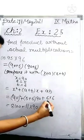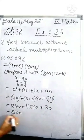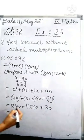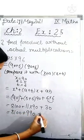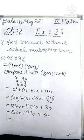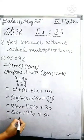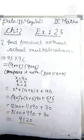5 multiply 6 is 30. So 8,100 plus 990 plus 30. What will be its product? When I add it, I get 9,120 as my answer.